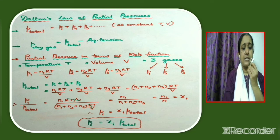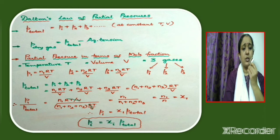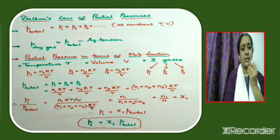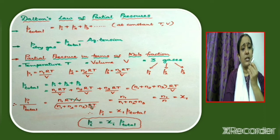To derive this relationship, consider three gases enclosed in a volume V at constant temperature T. Let the pressures exerted by the individual gases be P1, P2, and P3. From the ideal gas equation PV = nRT, we have P1 = n1RT/V, P2 = n2RT/V, and P3 = n3RT/V. The total pressure P_total = P1 + P2 + P3 = (n1 + n2 + n3)RT/V.